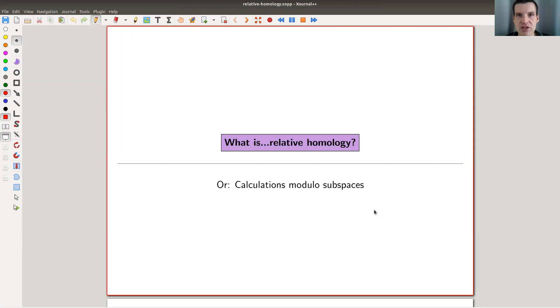Okay, welcome everyone to my continuation of what is algebraic topology. Today I would like to tell you about relative homology. It's kind of homology of x mod a, where a is a subspace of x, not quite as we will see.